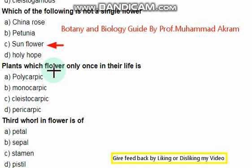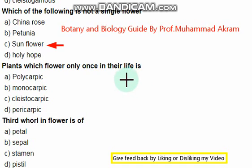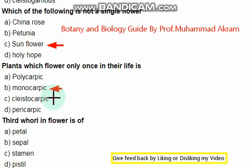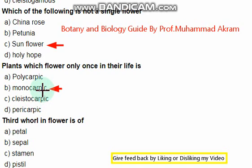The next question: plants which flower only once in their life span are known as polycarpic? No — monocarpic. This is the right option. Monocarpic: plants which flower only once in their life are called monocarpic plants.